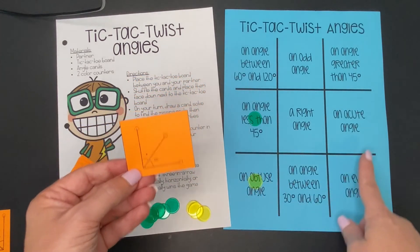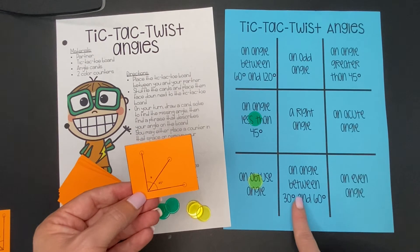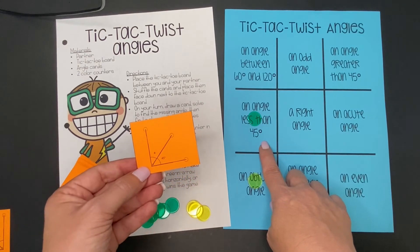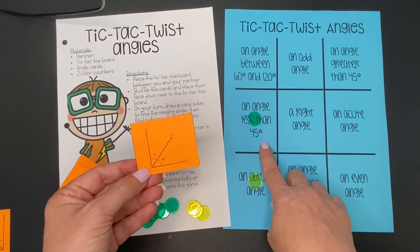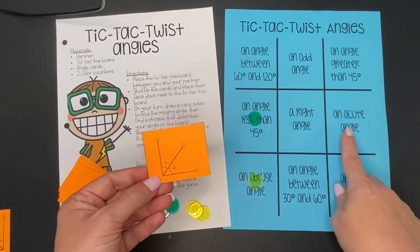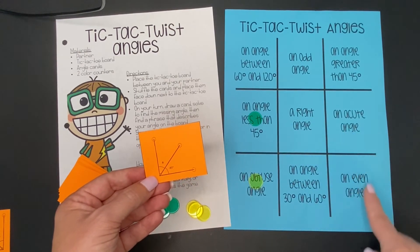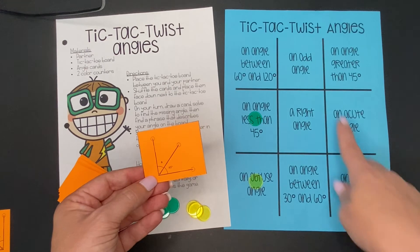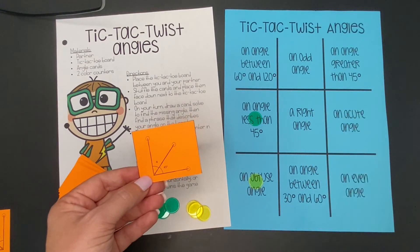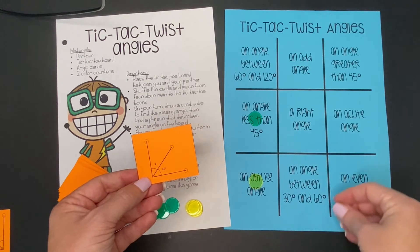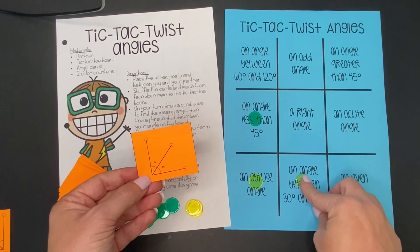So I can come over here. I could do between 30 and 60. I can't do less than 45 because it's exactly 45. An acute angle is anything smaller than a right angle, so I could do that one. I could do an odd angle. Since I'm trying to make three in a row, let's put our marker right here on between 30 and 60.